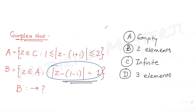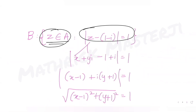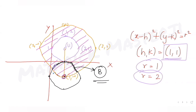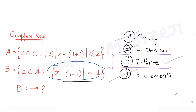Looking at the answer choices, B is clearly not an empty set, nor does it contain only two or three elements. The only matching answer is that B is an infinite set. Note: for set A the condition used ≥ and ≤, but for set B it is exactly equal to 1, meaning points lie on the circle.